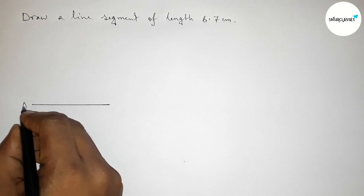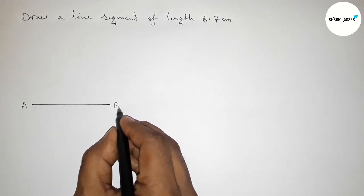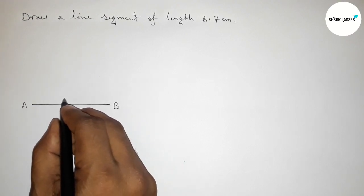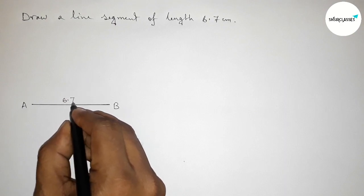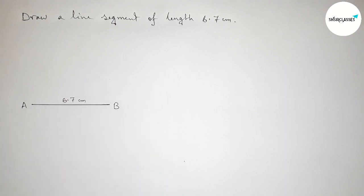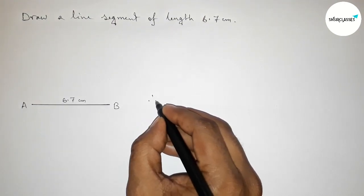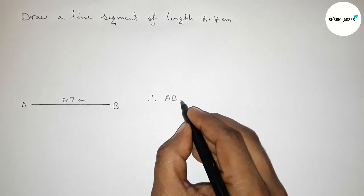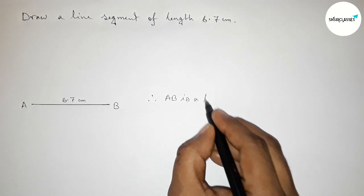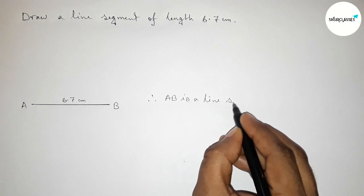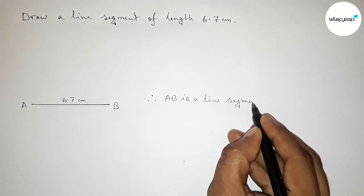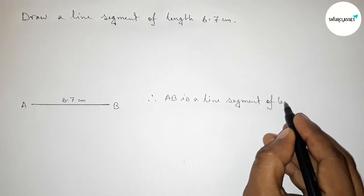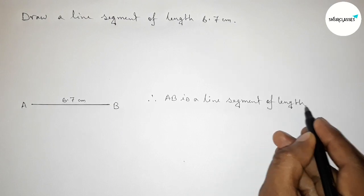So AB equals to 6.7 centimeter, a line segment. Therefore we can say that AB is a line segment of length 6.7 centimeter and you can draw this line with the help of a scale by this way, okay.